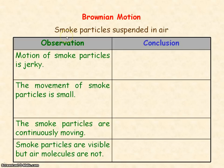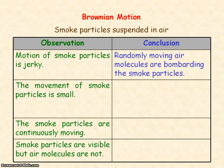Brownian motion has also been observed for smoke particles suspended in air when viewed under a microscope. The smoke particles have a jerky motion because they are constantly being bombarded by the randomly moving air molecules.